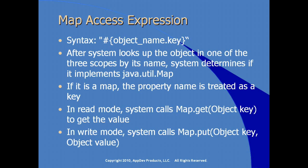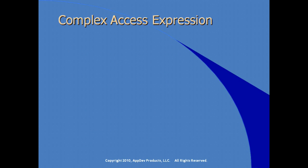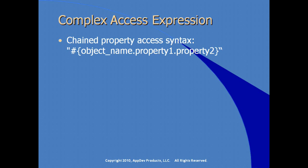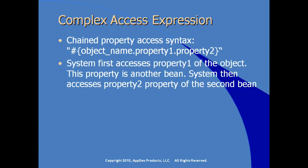It is possible, although your project discipline may determine this isn't easily readable, to create quite complex access expressions. For example, chained property access syntax: object name dot property1 dot property2. The system first accesses property1 of the object — this property is obviously another object instance — and then the system accesses property2 of that second object. You can see where this might get difficult to read very quickly.